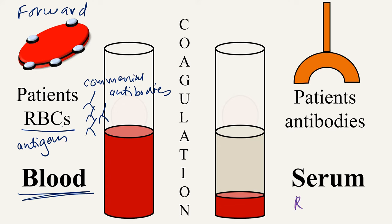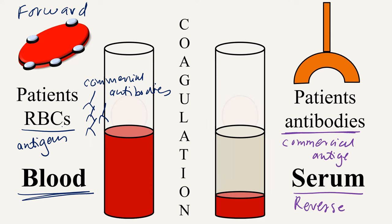In reverse typing, we use the serum of the patient. In the serum, the patient's antibodies are already present. Thus we will have to add commercially prepared antigens to find out the blood group of the individual. So in forward typing, you use the blood sample which contains the antigen, so you add the antibodies. In reverse typing, you use the serum sample which contains the antibodies, so you add the commercially prepared antigens for blood typing.